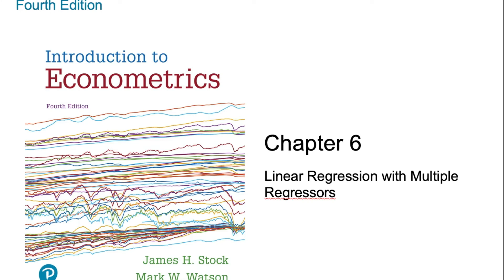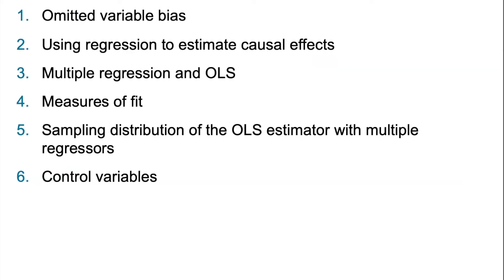Hey students, Professor Nugent here. With this video, we start Chapter 6, Linear Regression with Multiple Regressors. In Chapter 6, we will discuss omitted variable bias using regression to estimate causal effects, multiple regression and OLS, measures of fit, sampling distribution of the OLS estimator with multiple regressors, and we will conclude Chapter 6 with a discussion of control variables.